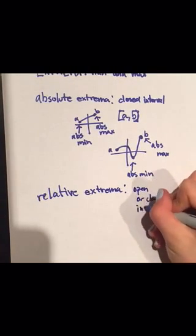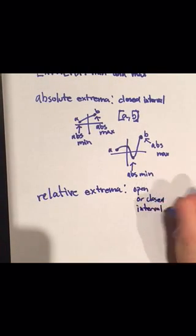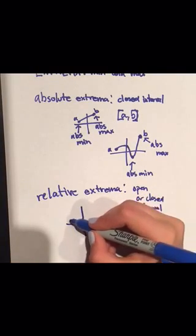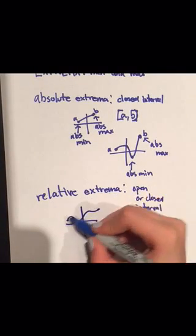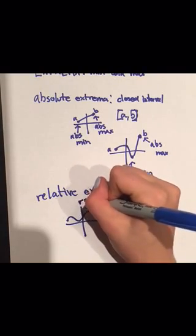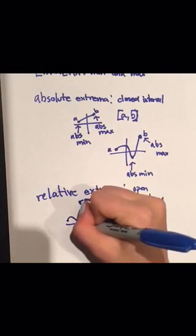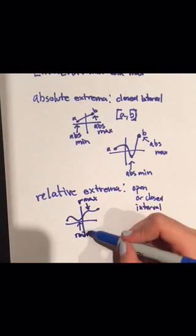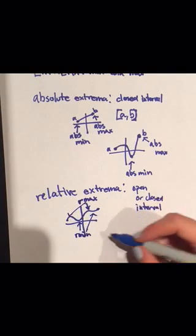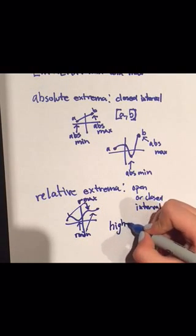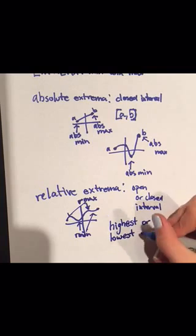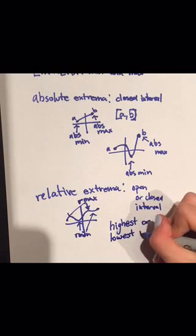Relative extrema can be on an open or a closed interval. Relative extrema is similar to absolute extrema; however, it does not have to be the single highest or single lowest point on the interval — there can be multiple relative extrema per interval. A good way to think of relative extrema is as the highest or lowest of the surrounding points, or as the hills and valleys of the function.